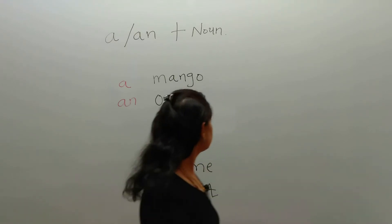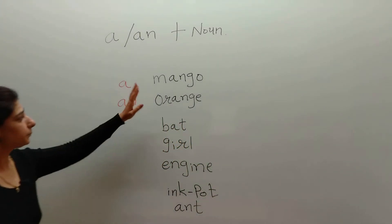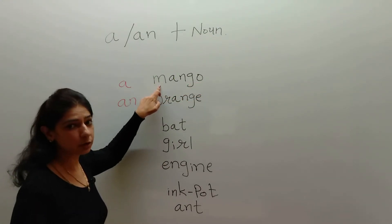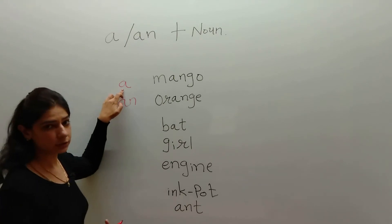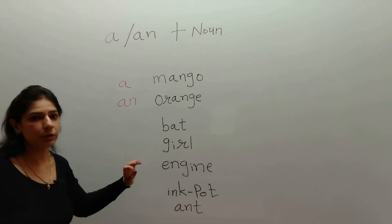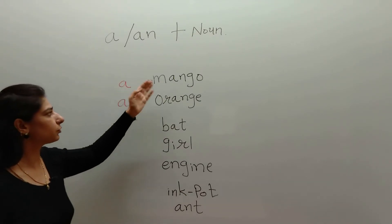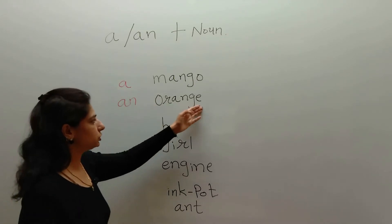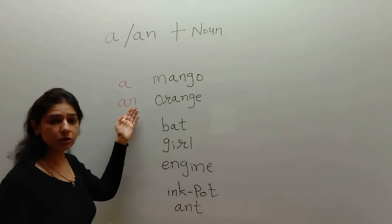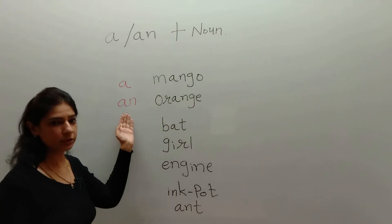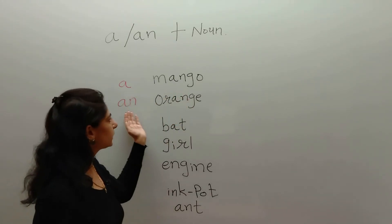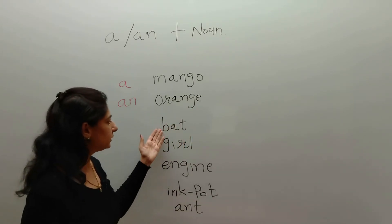Now let's look at the use of 'a' or 'an' in front of a noun. For example, 'mango' — it starts with an M sound, which is a consonant, so we put 'a' in front: a mango. 'Orange' starts with an O sound, which is a vowel, so we put 'an' in front: an orange. In front of a consonant sound we put 'a'; in front of a vowel sound we put 'an.'